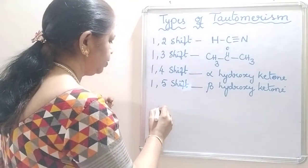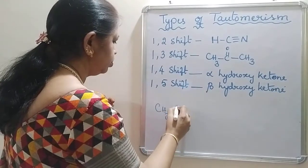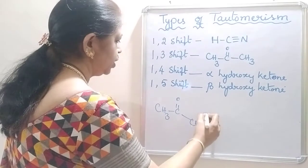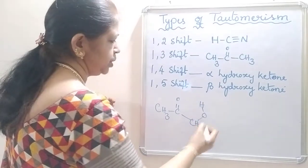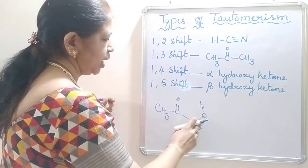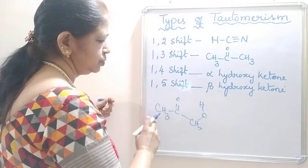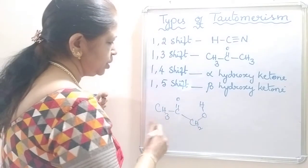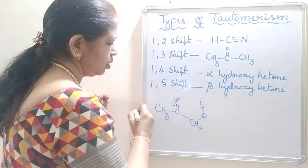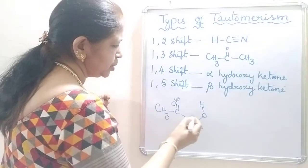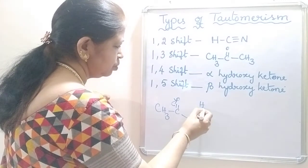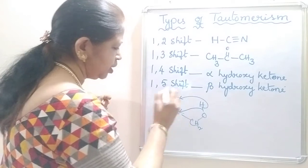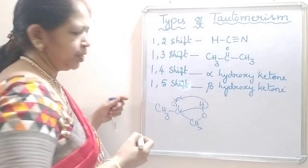Now I am going to take CH3-C double bond O-CH2-OH. This is alpha hydroxy ketone. These two are alpha carbon atoms, alpha hydroxy ketone. In this, the bonded pair will move towards the oxygen and here what happens is, this proton moves towards the oxygen and this bonded pair will come onto the carbonyl carbon.